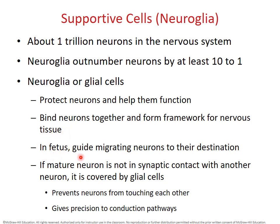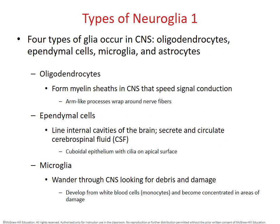During fetal development, secretions of glial cells help stimulate neurons to grow along certain pathways, and they provide a physical framework along which developing neurons can grow. They surround and enclose neurons, providing physical and biochemical support. There are actually six different types of glial cells. Four occur in the central nervous system: oligodendrocytes, ependymal cells, microglia, and astrocytes. The two that occur in the peripheral nervous system are called Schwann cells and satellite cells.